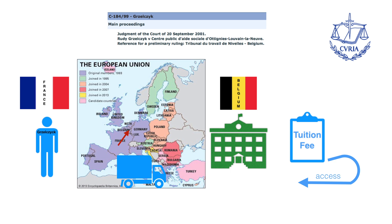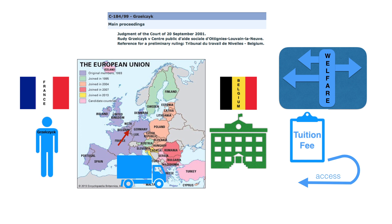By 1999, the European Court of Justice had already stated that access to institutions and tuition fees are subject to EU law. In 1999, a Belgian labor court referred the question whether EU law would extend the right to social assistance for students from another member state.